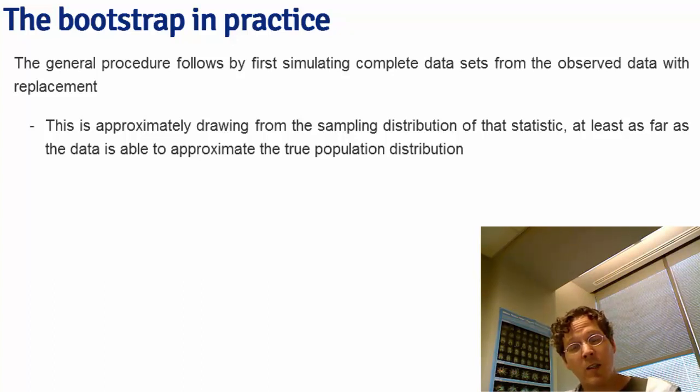For each of the simulated data sets, you calculate the statistic of interest. And this is approximately drawing from the sampling distribution of that statistic, at least as far as the data approximates the real population distribution.